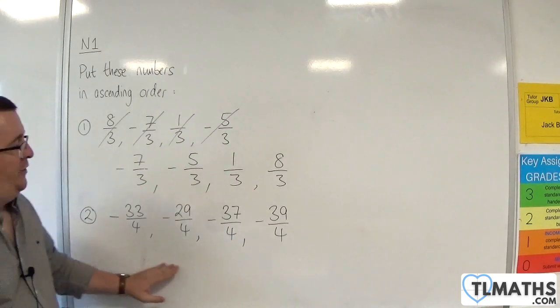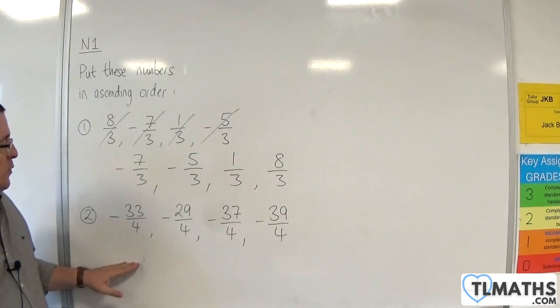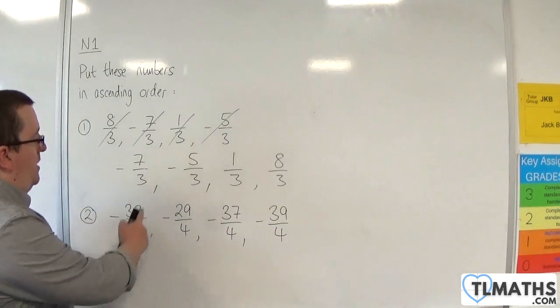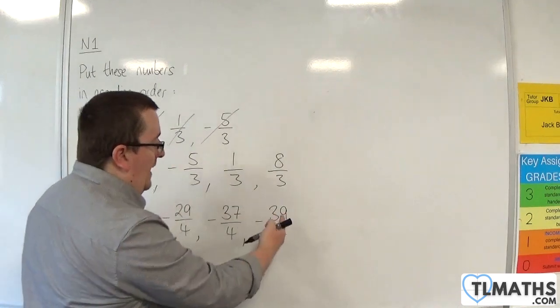And we're going to do a similar thing for number 2 here. So ignore the fact that they're all over 4. And we've got minus 33, minus 29, minus 37, and minus 39.